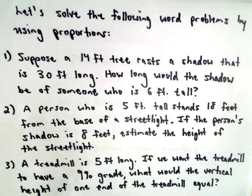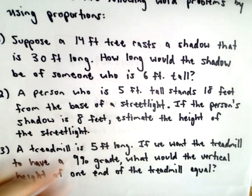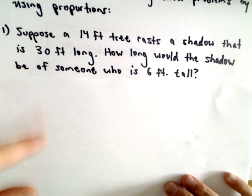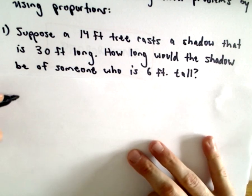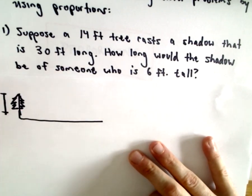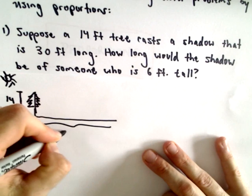In example one, we have a pretty typical type of problem. It says suppose a 14-foot tree casts a shadow that's 30 feet long. We want to know how long would the shadow be of someone who is 6 foot tall.